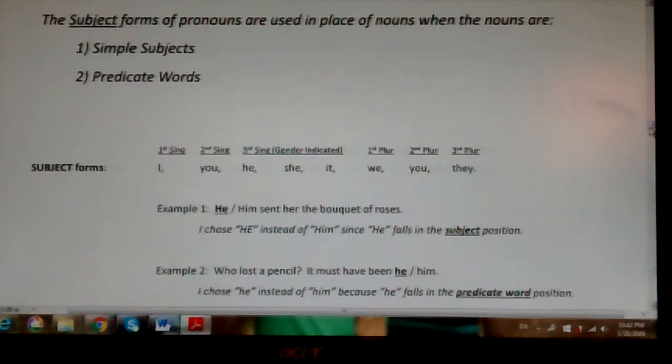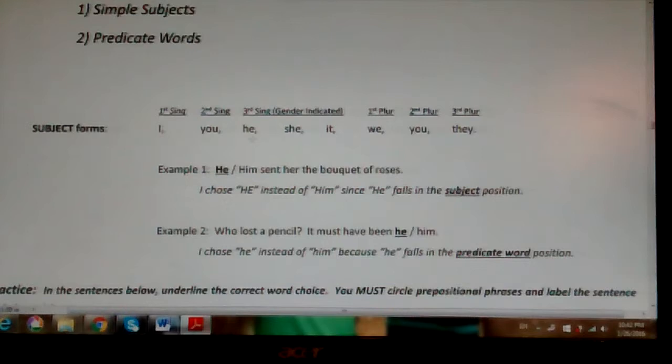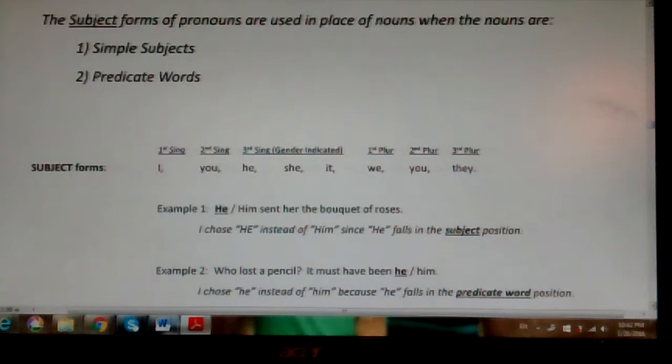It says right here the subject forms of pronouns are used in place of nouns when the nouns are simple subjects or predicate words. As I showed you earlier, up above subject forms: I, you, he, she, it—don't say that too quickly—there he, she, it, and the plural forms: we, you, and they. All these things will be used in place of a simple subject.